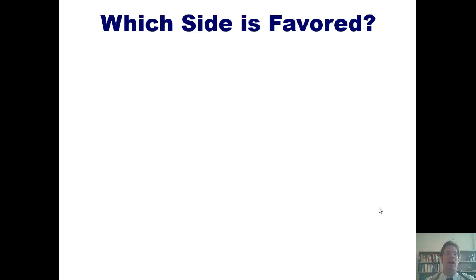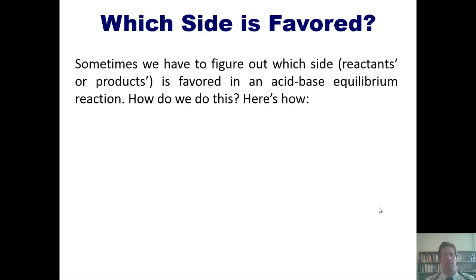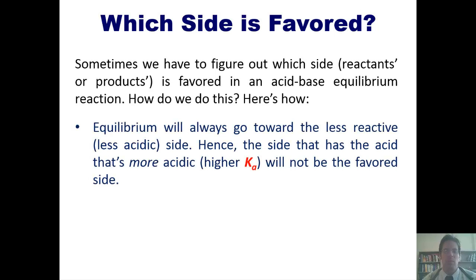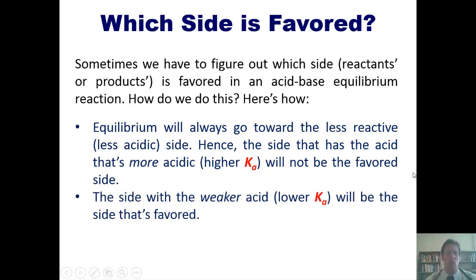Now, which side is favored in an acid-base equilibrium reaction? Equilibrium will always drift toward the less reactive, more stable side. The side with the more acidic acid — the one with the larger Ka — will not be the favored side. It follows that the side with the weaker acid, which has the smaller Ka value, will be the favored side. In any equilibrium reaction, the equilibrium favors the weaker acid side. All we have to do is use Ka values to figure out which side that is.